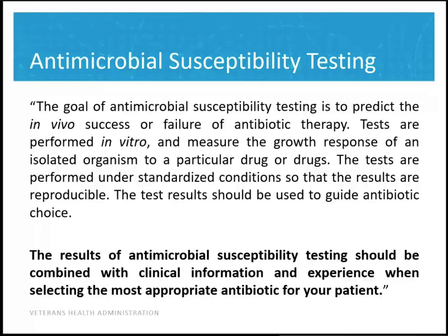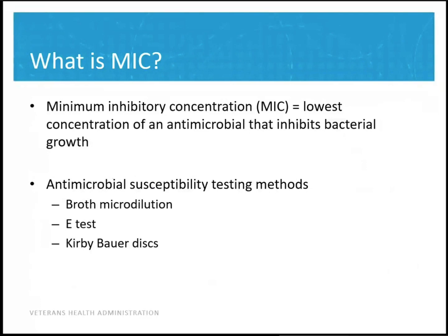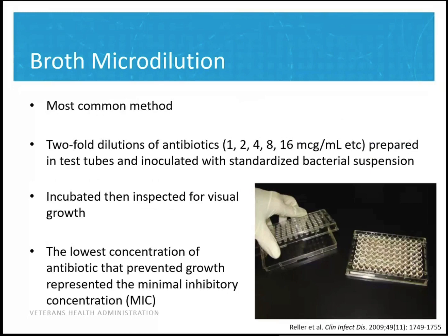What is an MIC? That's the minimum inhibitory concentration — the lowest concentration of an antimicrobial that inhibits bacterial growth. There are a couple of common susceptibility testing methods: broth microdilution, E-test, and Kirby-Bauer discs. With broth microdilution, two-fold dilutions of antibiotics are prepared in test tubes, inoculated with a standardized bacterial solution, incubated, and inspected for growth. The lowest concentration that prevented growth is the MIC.